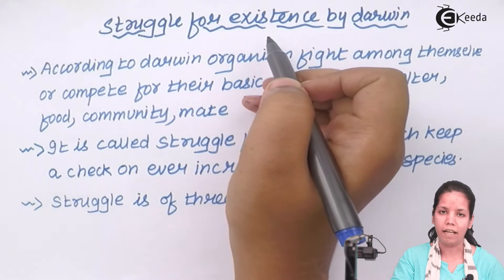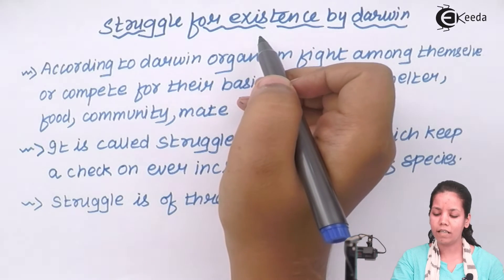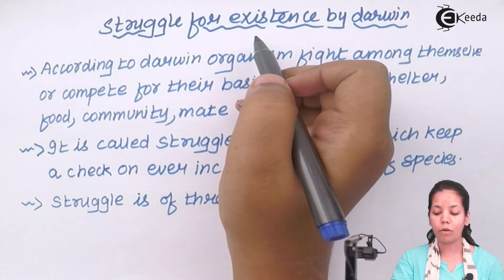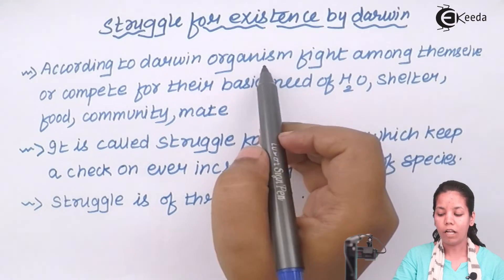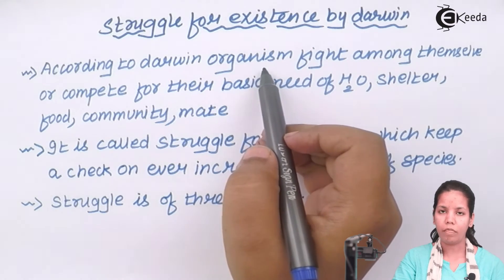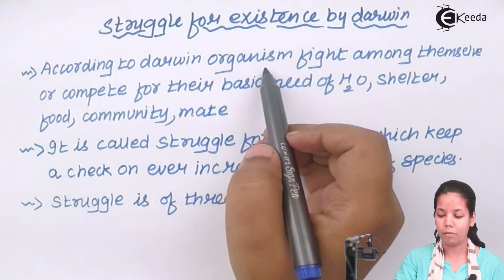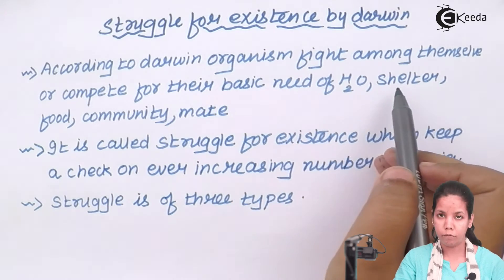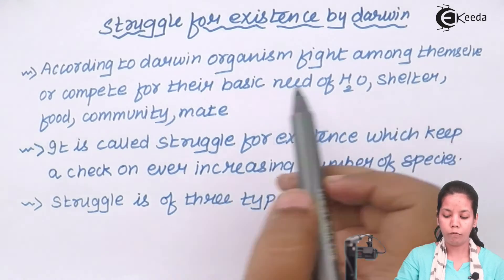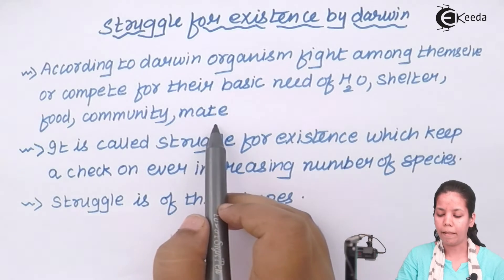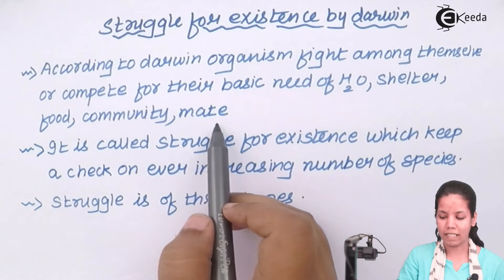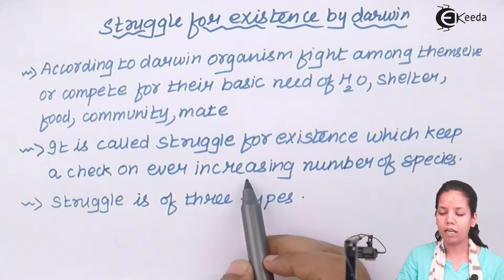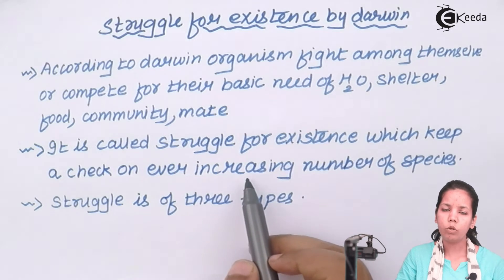Struggle for Existence by Darwin. Now Darwin's theory precisely pinpointed or laid quite emphasis on this. According to Darwin, organisms fight or they have severe competition among themselves for their basic survival instinct of water, home or shelter, food, and mate or partner. Now this is called struggle for existence which keeps a check on ever increasing number of species.